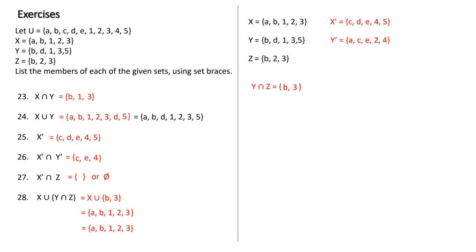Problem 28 requires following order of operations — do parentheses first. First find the intersection of Y and Z: Y and Z share B and 3. Now take X union {B, 3}: X is {A, B, 1, 2, 3} and I already have B and 3, so the answer is A, B, 1, 2, 3. When doing these problems, not in X gives C, D, E, 4, 5; not in Y gives A, C, E, 2, 4; Z is B, 2, 3; and the intersection of Y and Z gives B and 3.